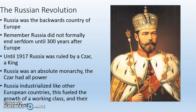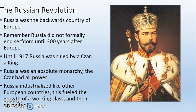Let's start with the Russian Revolution. Russia was the backwards country of Europe — its nickname was the old man of Europe. It dragged behind technologically. In Europe it had lots of people, but they were largely uneducated. You had a large population of peasants. The Industrial Revolution did happen much, much later in Russia. Russia did not end serfdom until 300 years after Europe.